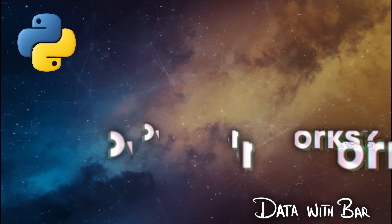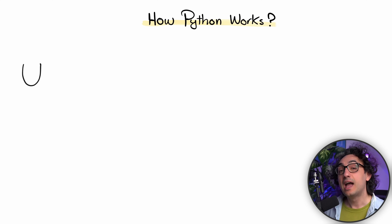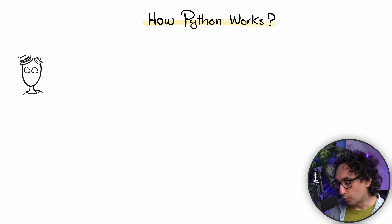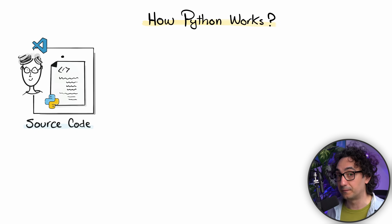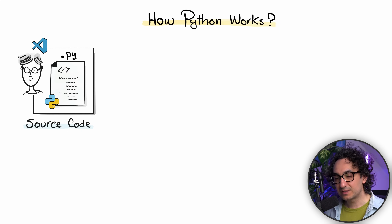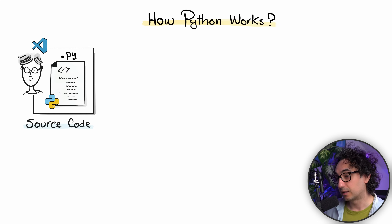Now I'd like you to understand exactly how Python works. Let's say you open your editor and start writing Python code. We usually write code inside a Python file with the file extension .py — this is your source code. Once you run your code, the computer cannot immediately execute your instructions because it is high-level and the computer needs a lower level of code.